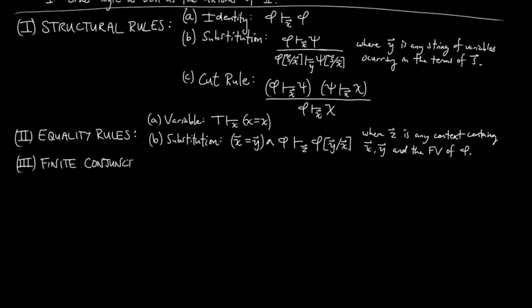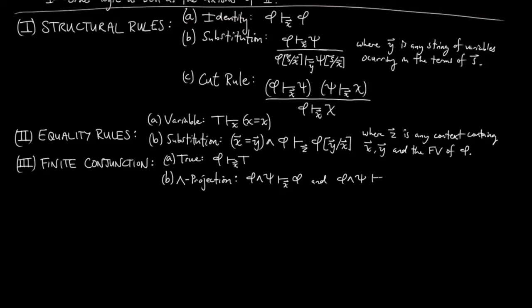Third, finite conjunction. A: true — we have the axiom that phi entails true in the context of x. In other words, true can be thought of as the terminal object if we replace these entailments with arrows. B: conjunction projections — we have the axioms 'phi and psi entail phi in the context of x' and 'phi and psi entails psi in the context of x,' which can be thought of as projections from a product in a category. C: the conjunction universal mapping property — if phi entails psi in the context of x and phi entails chi in the context of x, then phi entails psi and chi in the context of x.